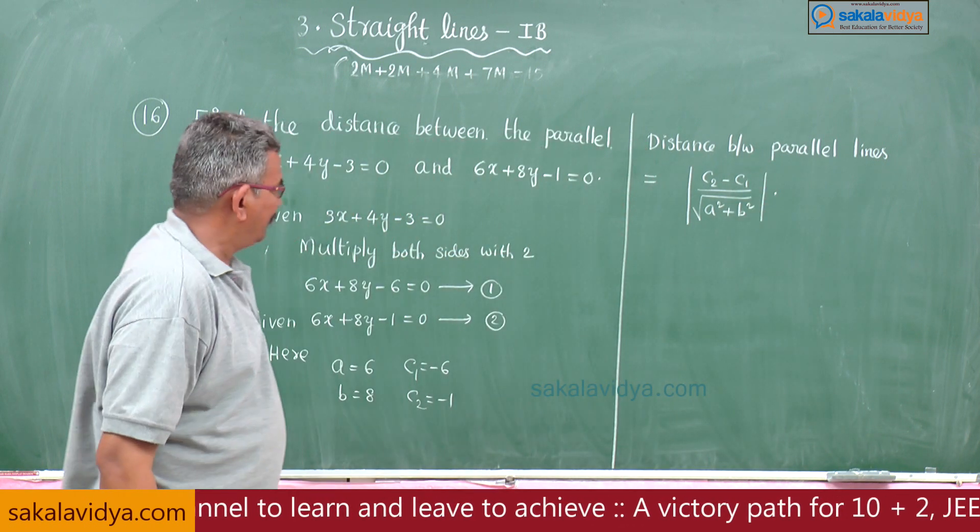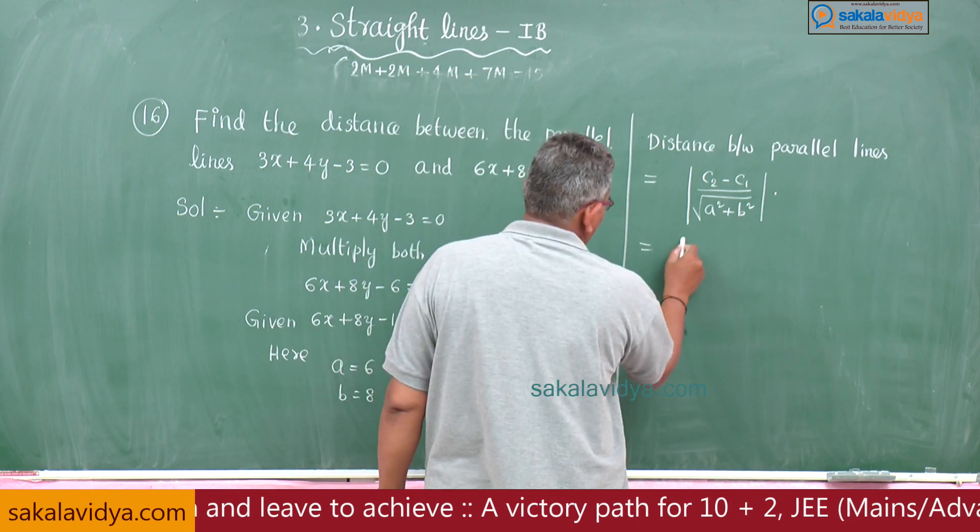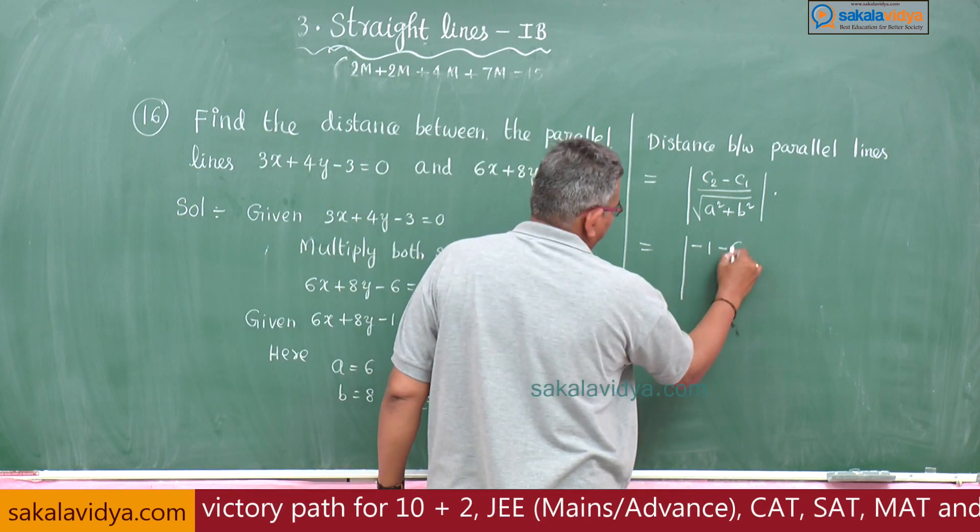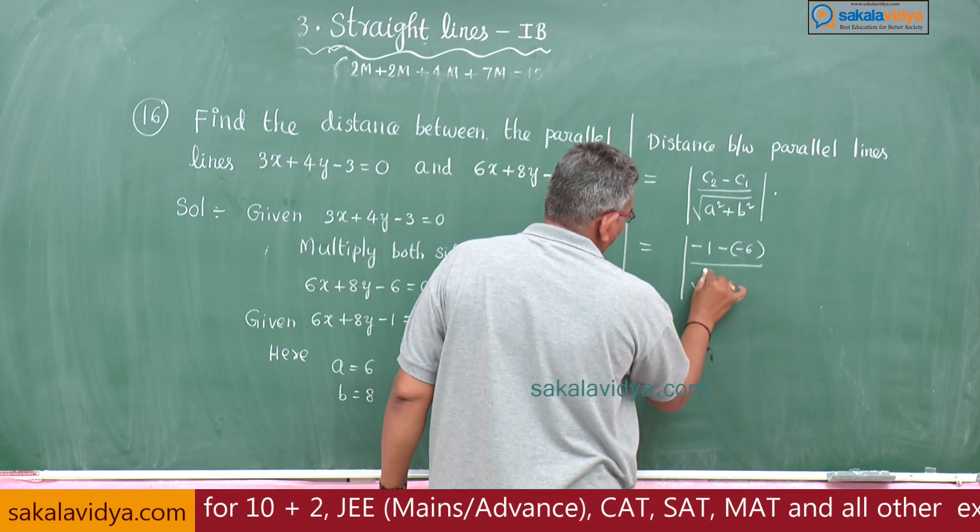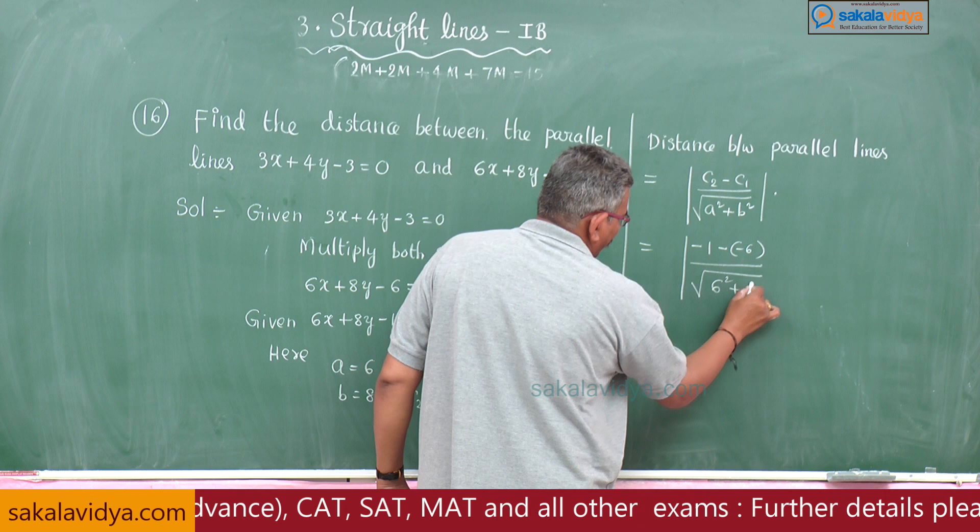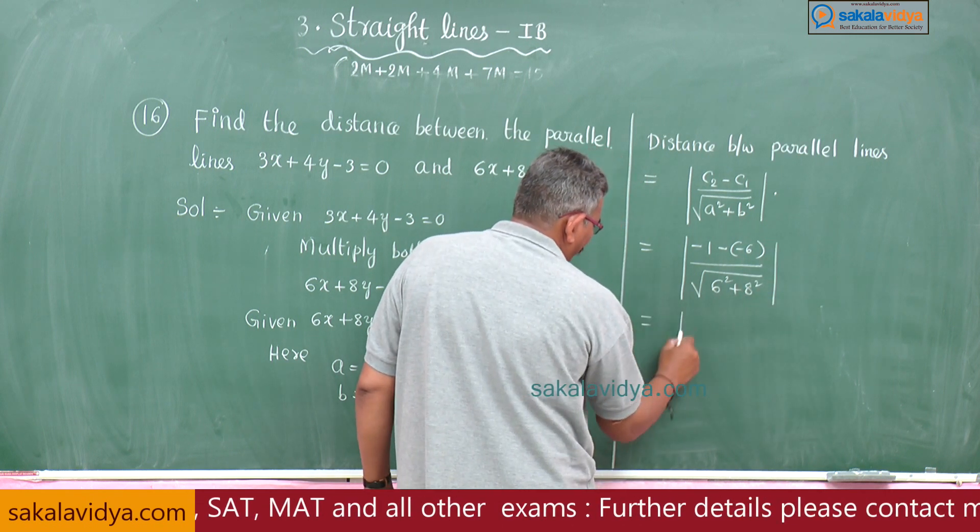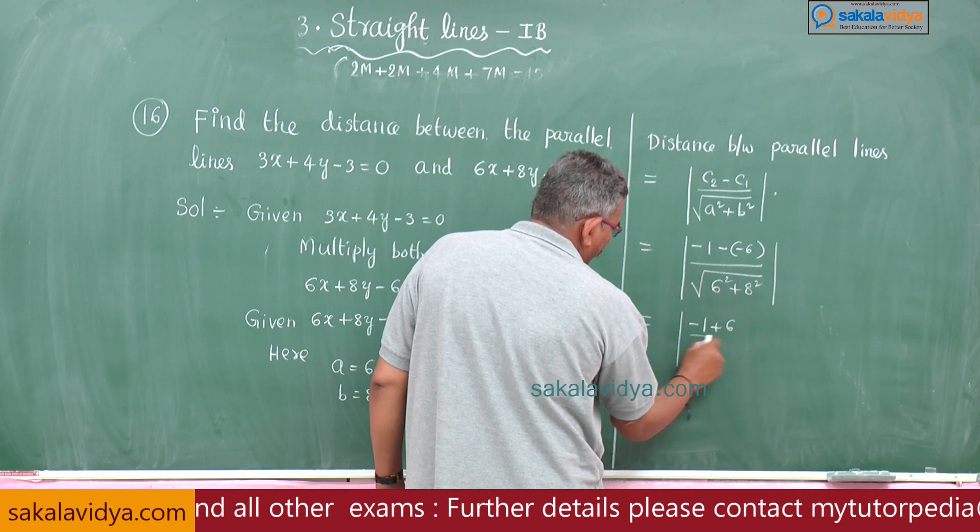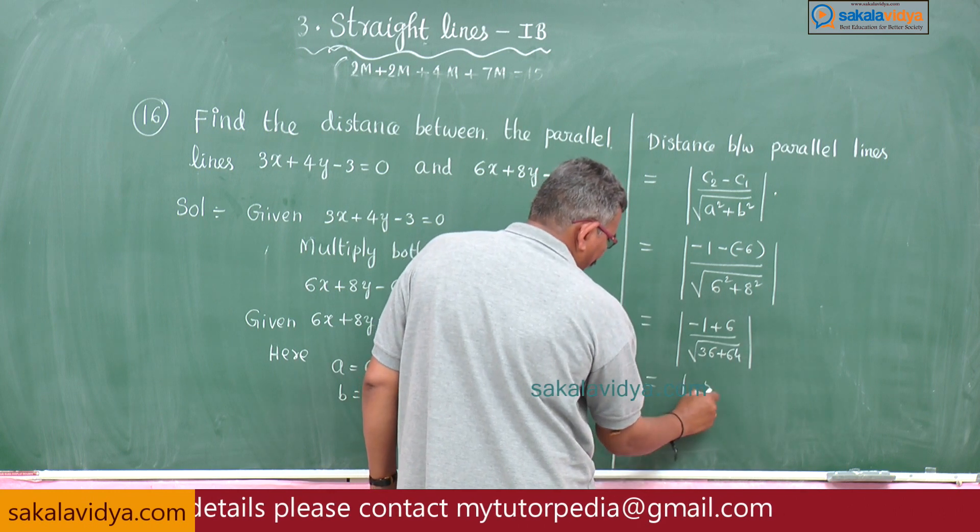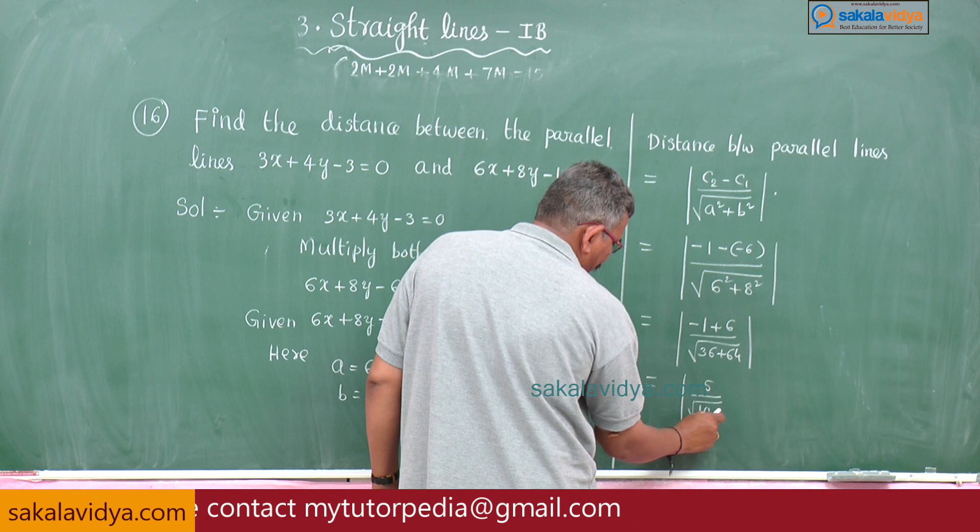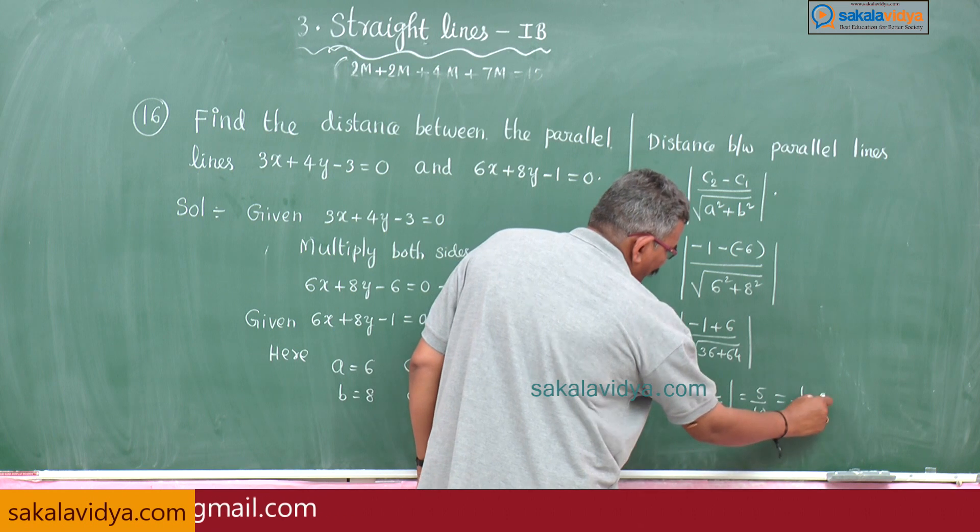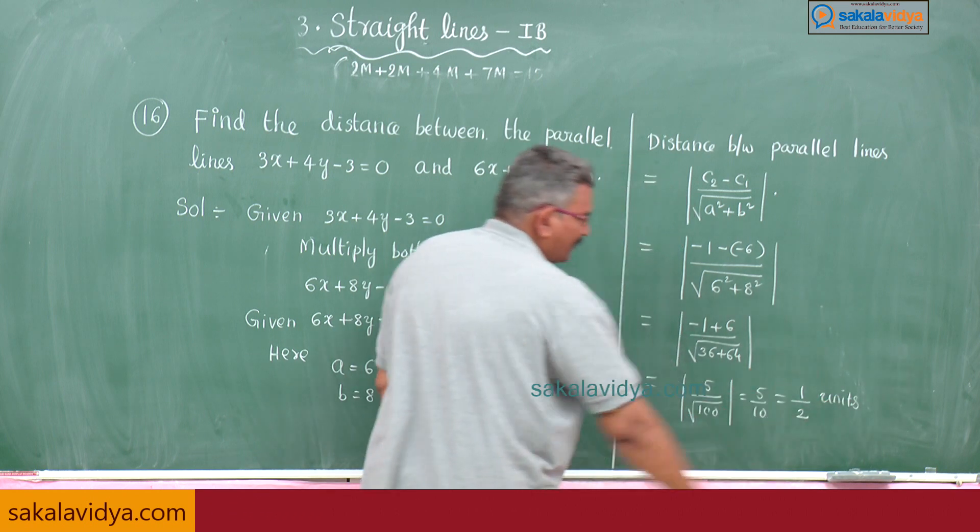I think you could remember this. c2 is minus 1, c1 is minus 6. So minus 1 minus minus 6, be very careful here. Root over a square is 6 squared plus b square is 8 squared. This is modulus of minus 1 plus 6 by root of 36 plus 64. So this is 5 divided by root of 100, which equals 5 by 10, which is 1 by 2 units.